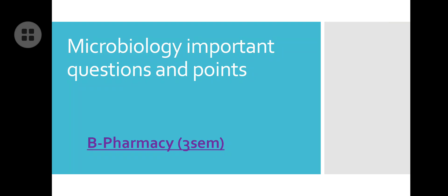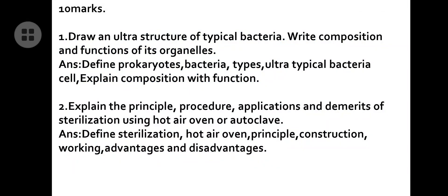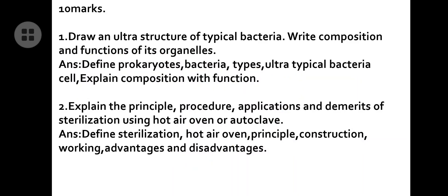First let's discuss the 10-marker questions. Notes are also available — I will show you the PDF notes at the end. First question: draw an ultra structure of a typical bacteria and write the composition and functions of its organelles. For this, draw a prokaryotic bacterial cell. First define prokaryote, then define what bacteria is, go for some types of bacteria like cocci type and rod shape, then draw the ultra structure of a typical bacteria and explain the composition and functions of the organelles present.